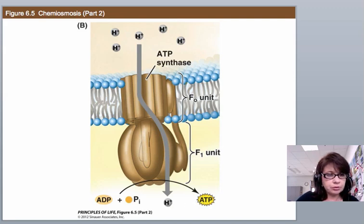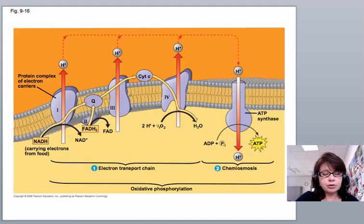Going back to where we are, all the way down here. We covered a lot of ground. This is what's happening in the inner membrane. This is called the electron transport chain.